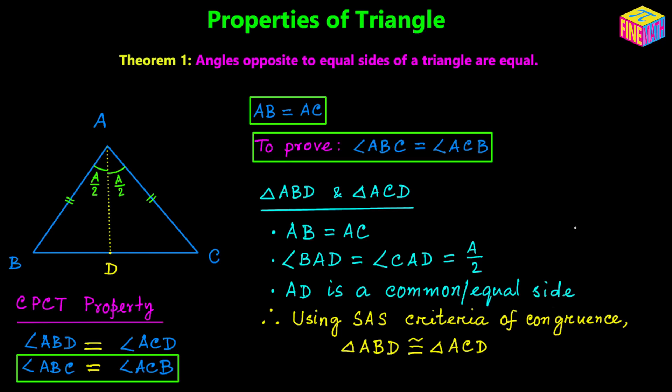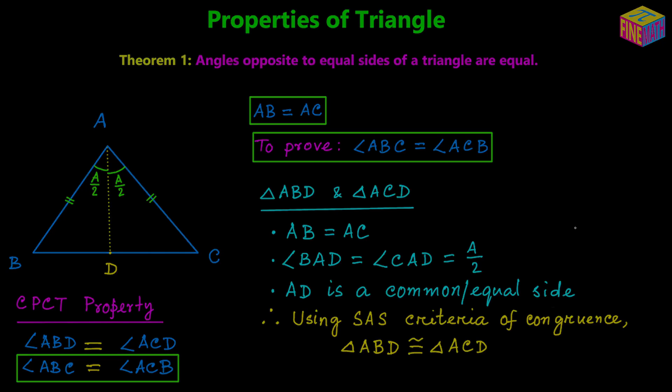The converse of this theorem is also true: sides opposite to equal angles of a triangle are equal, and we are going to discuss that in the next video. Hope everything made sense so far. Thank you for watching — see you in the next video.